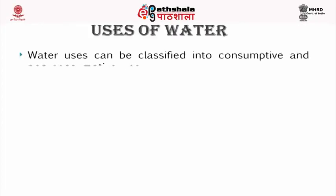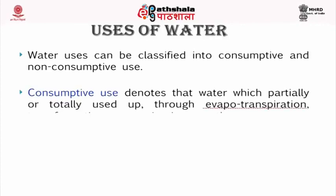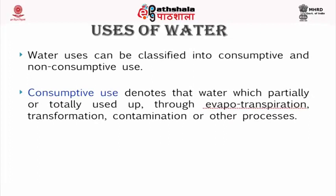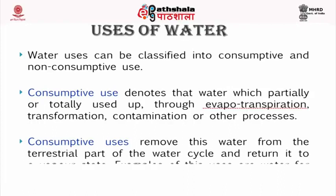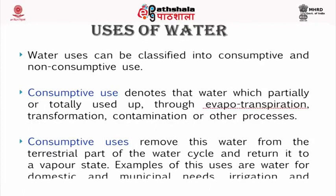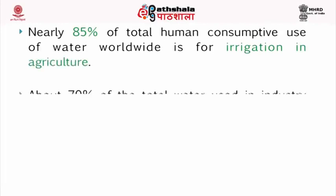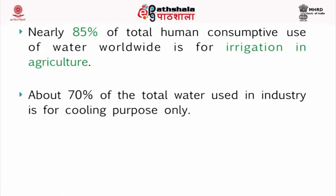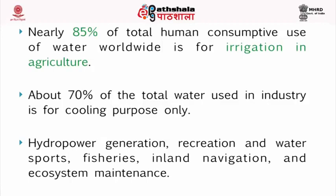Uses of water: Water uses can be classified into consumptive and non-consumptive use. Consumptive use denotes water which is partially or totally used up through evapotranspiration, transformation, contamination, or other processes, removing it from the terrestrial part of the water cycle and returning it to a vapor state. Examples include water for domestic and municipal needs, irrigation, and industry. Nearly 85% of total human consumptive use of water worldwide is for irrigation in agriculture, and about 70% of total water used in industry is for cooling purposes only. Hydropower generation, recreation, water sports, fisheries, inland navigation, and ecosystem maintenance are some other uses of water.